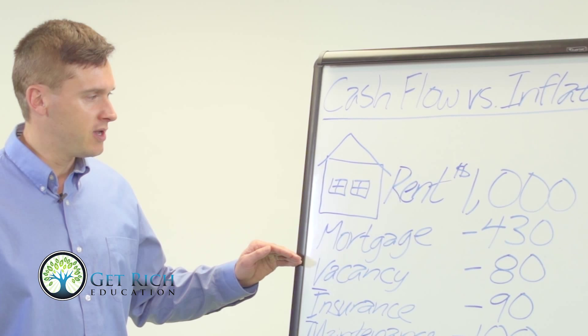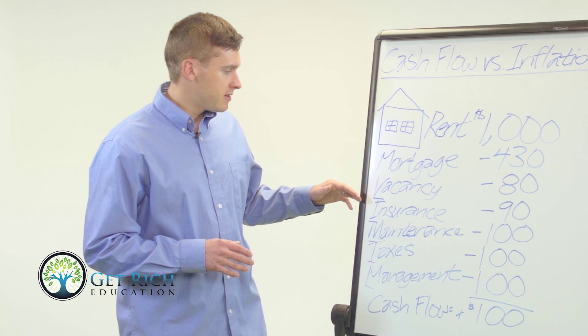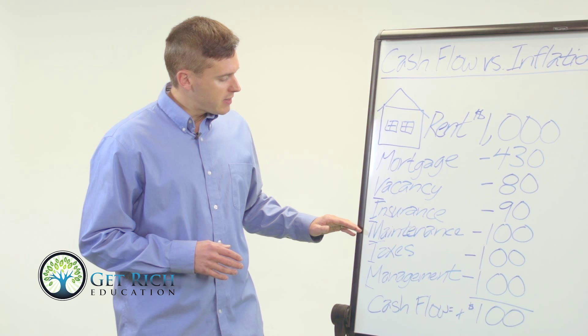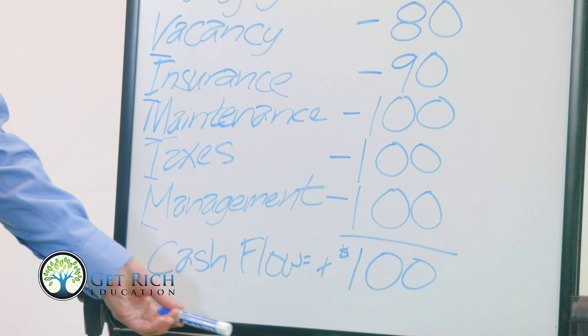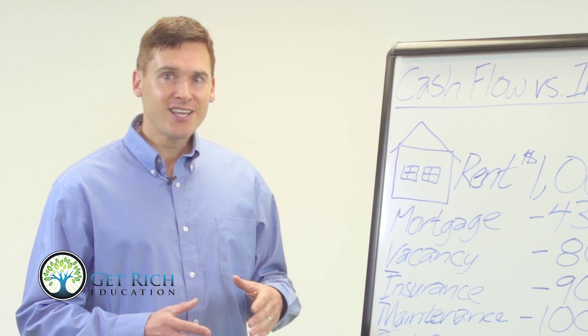For vacancy I used $80 per month, which is about 8% — exactly 8% of your rent amount — because that represents one month per year that the unit is going to be vacant. Insurance is at $90 per month, which is a pretty conservative number. Maintenance, property taxes, and property management are each at 10% of your rent income each month. These VIMTM expenses add up to a total of $470 per month.